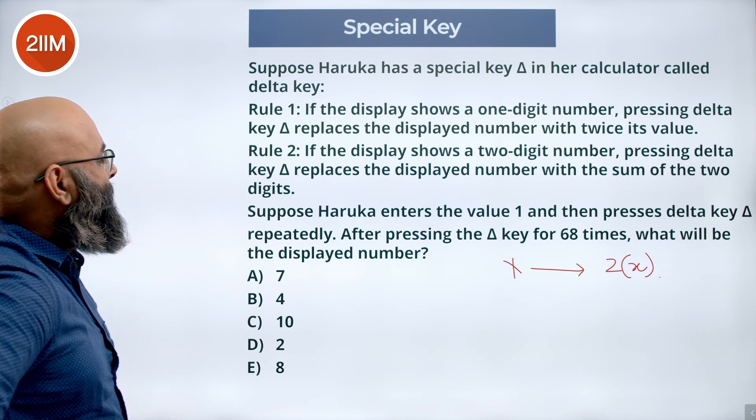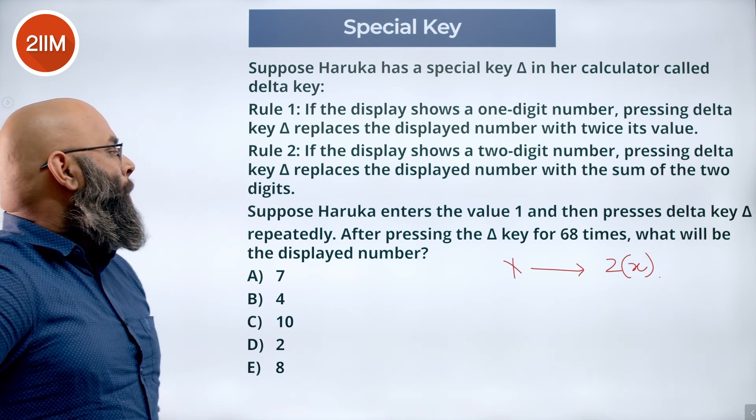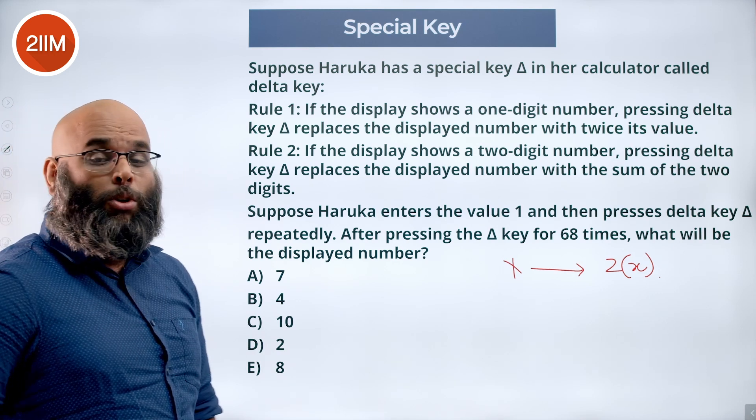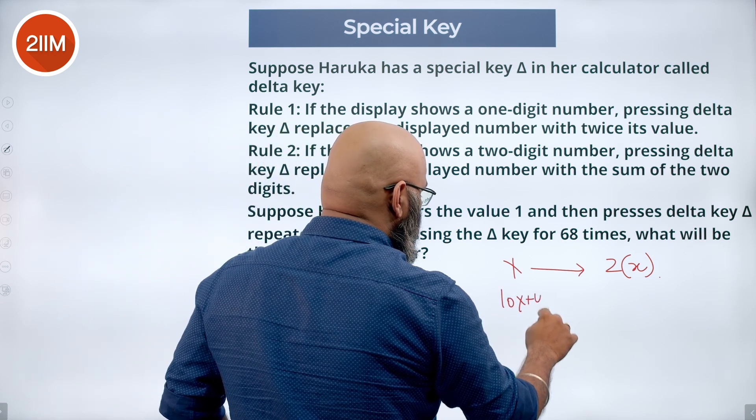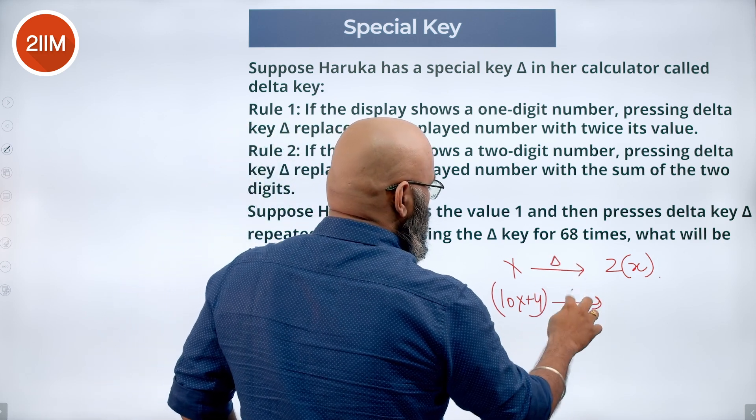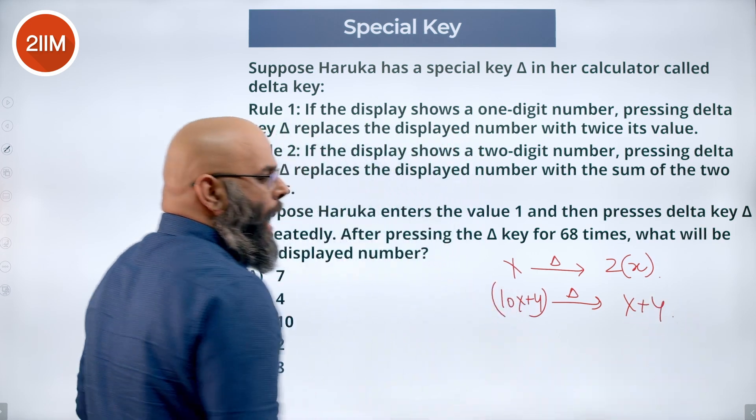Now the other one says: if the display shows a two-digit number, pressing delta key replaces the displayed number with the sum of the two digits. So if you have a two-digit number, let's say some 10x plus y format, when you press delta, you get x plus y. It adds the digits.